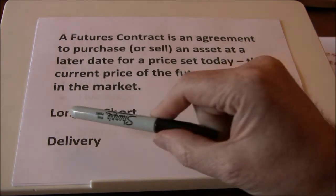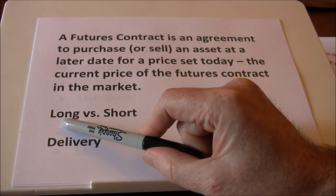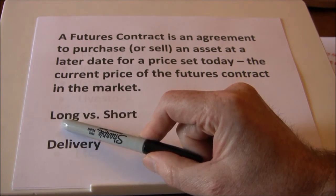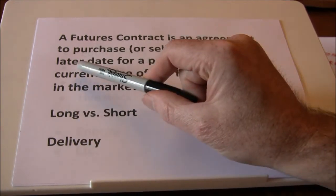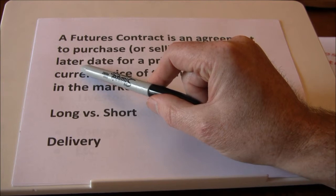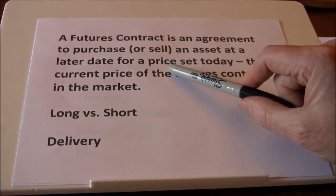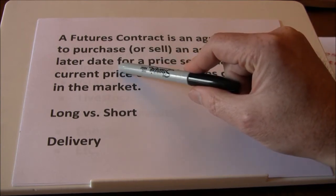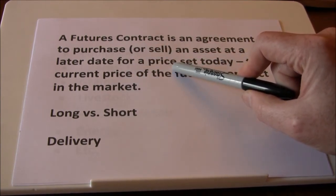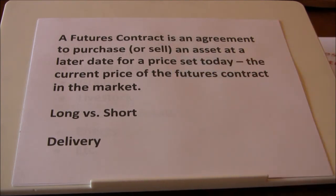An example might be going long, or purchasing the futures contract. If you go long, you're agreeing to take delivery of the underlying asset — you're trying to purchase that underlying asset at a later date. The later date is the maturity or expiration date, and the price set today is whatever the current market price is in the futures market for that asset. For example, if I buy a wheat futures contract, I'm agreeing to take delivery of bushels of wheat at expiration for whatever price I purchased those contracts at in the futures market today.